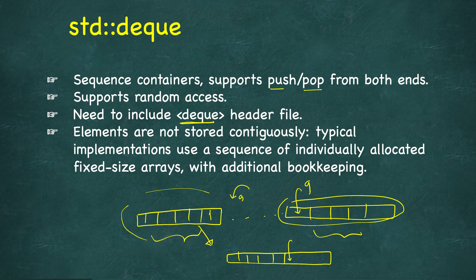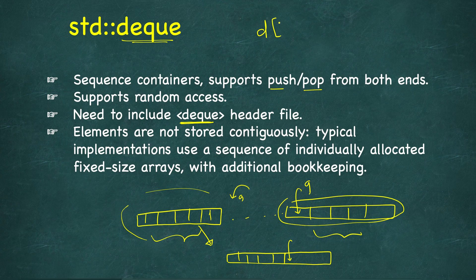Just like other STL containers, you need to include a header file whose name is exactly the same as the container itself in order to use it. Deque also supports random access — if you have a deque d and you want to access the third element, you can do d[2], since indexing starts from zero.